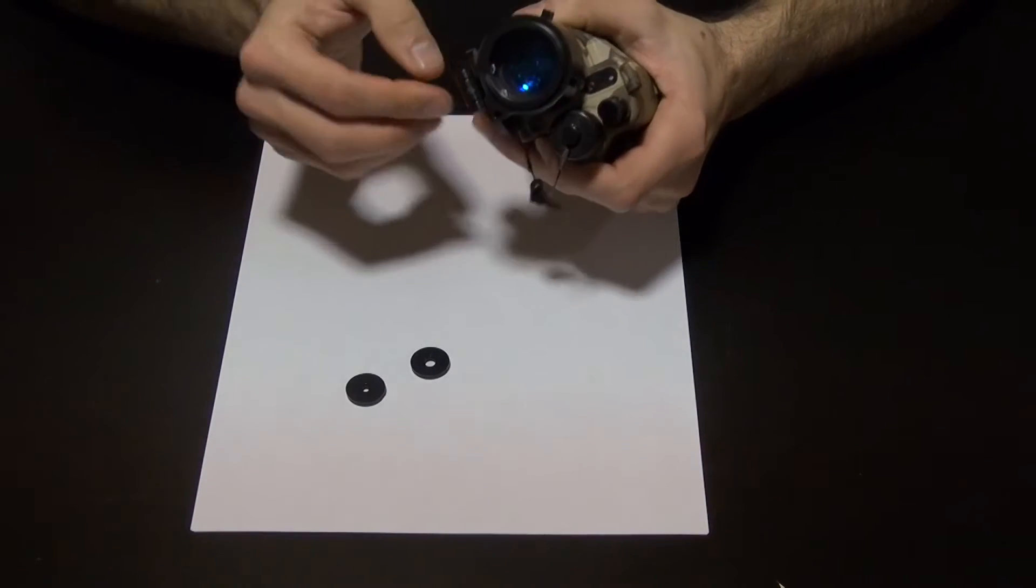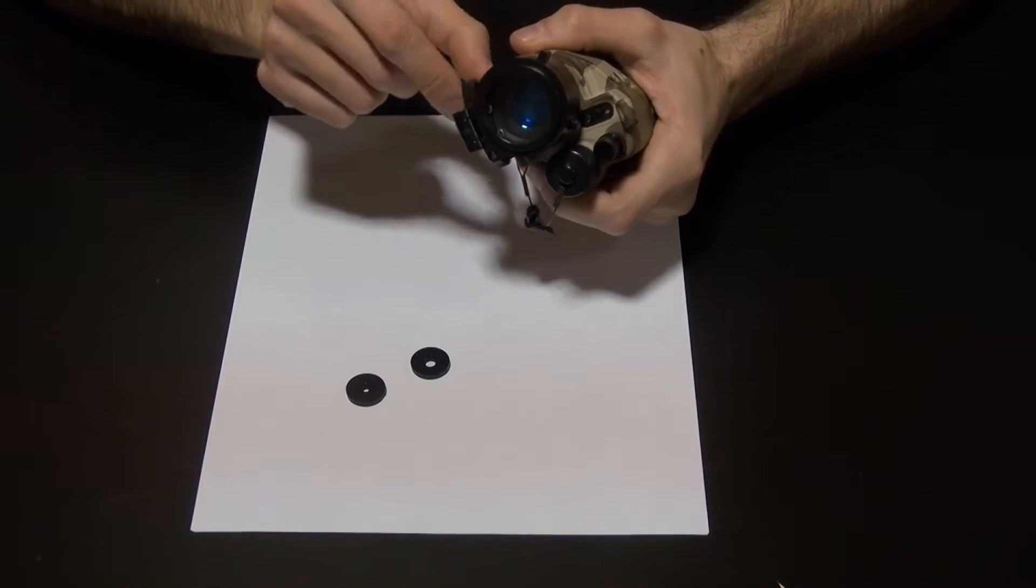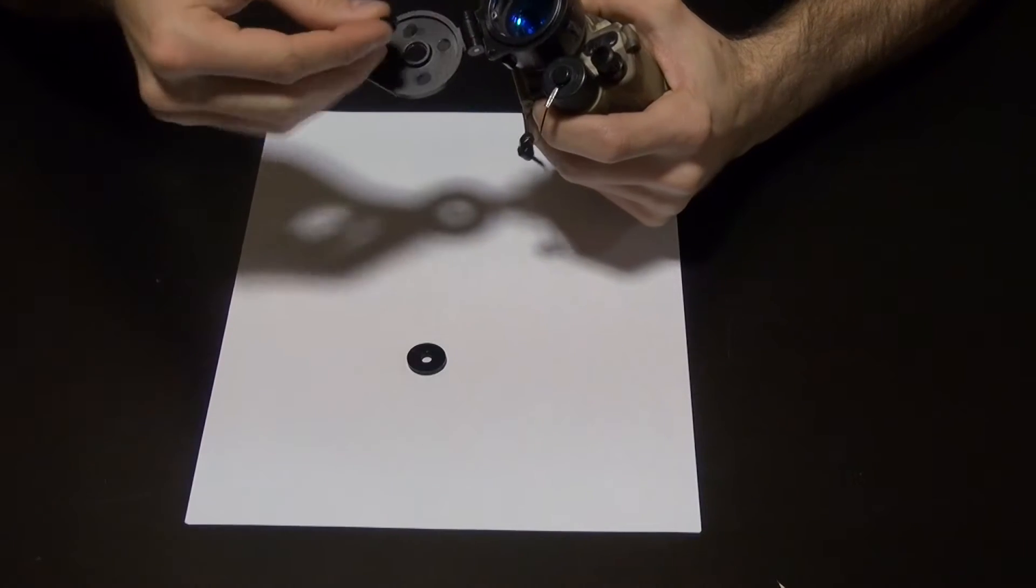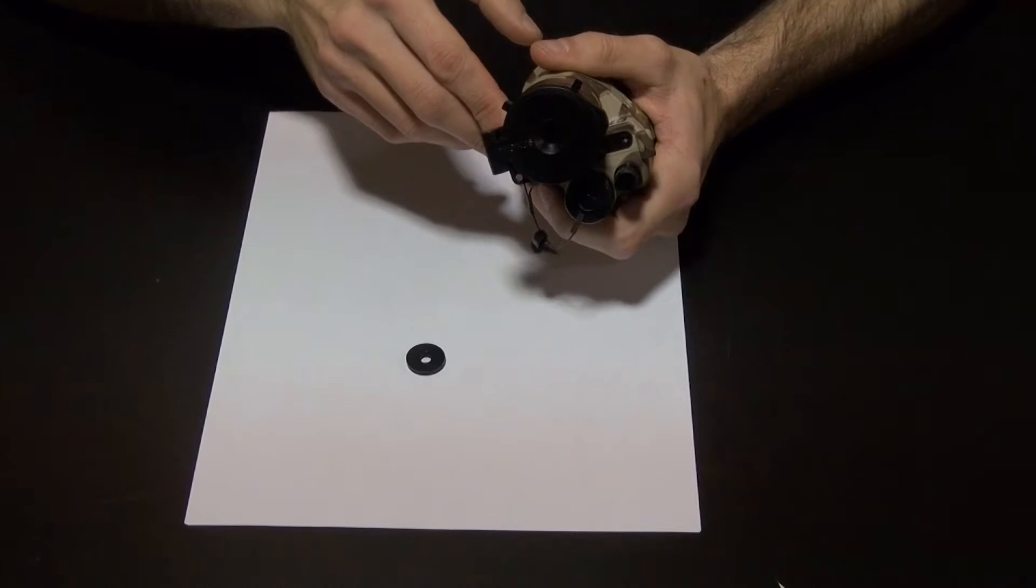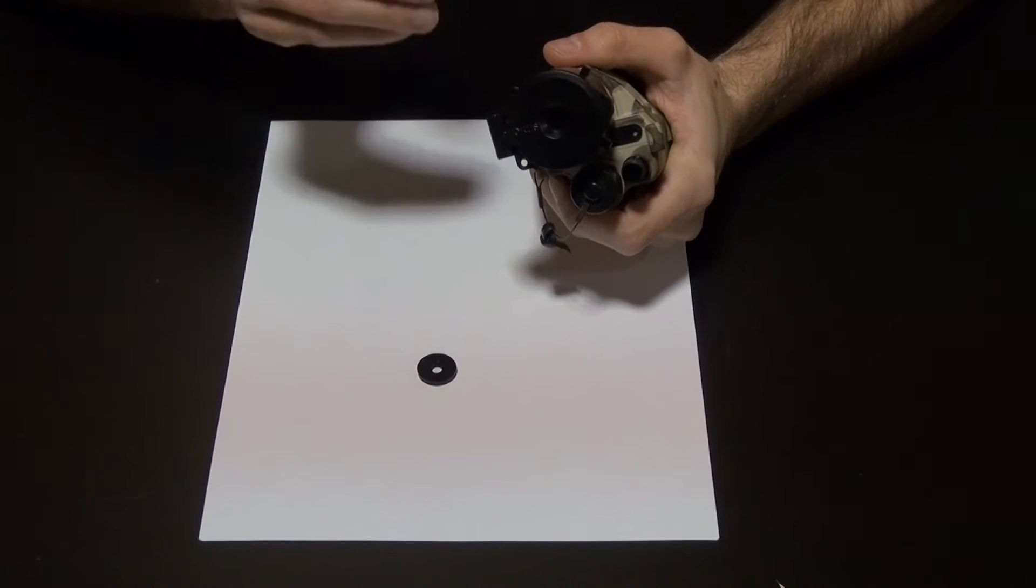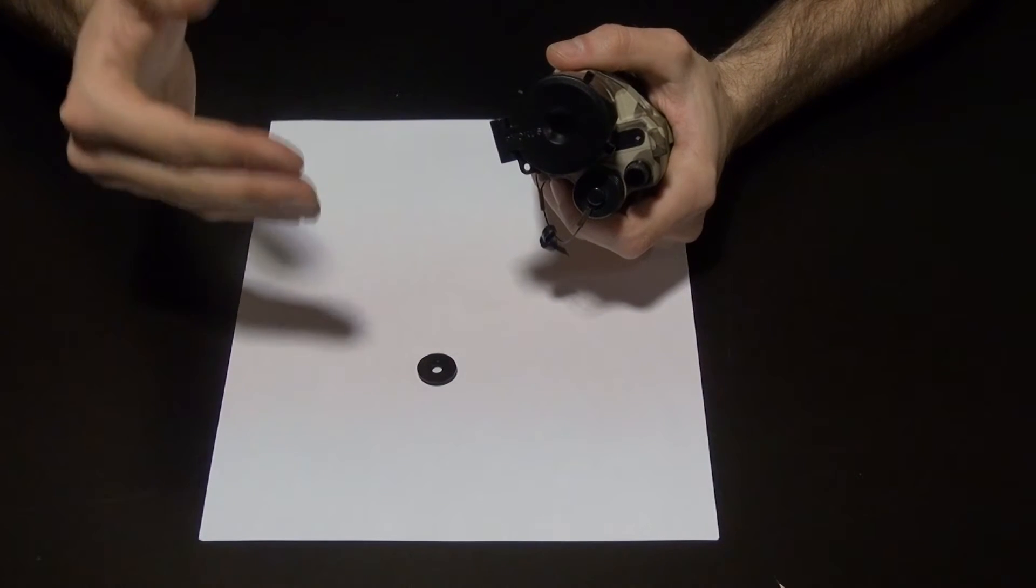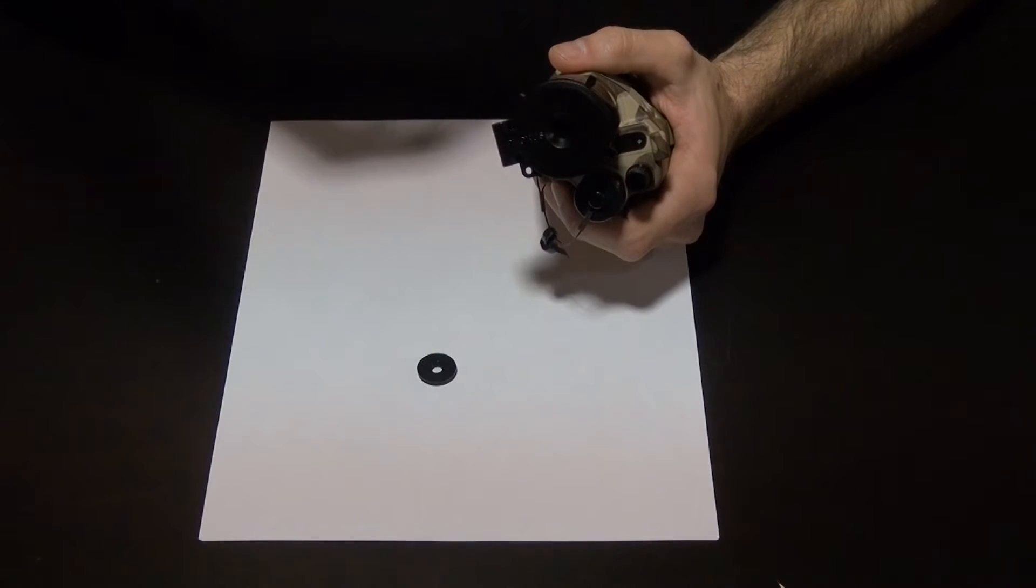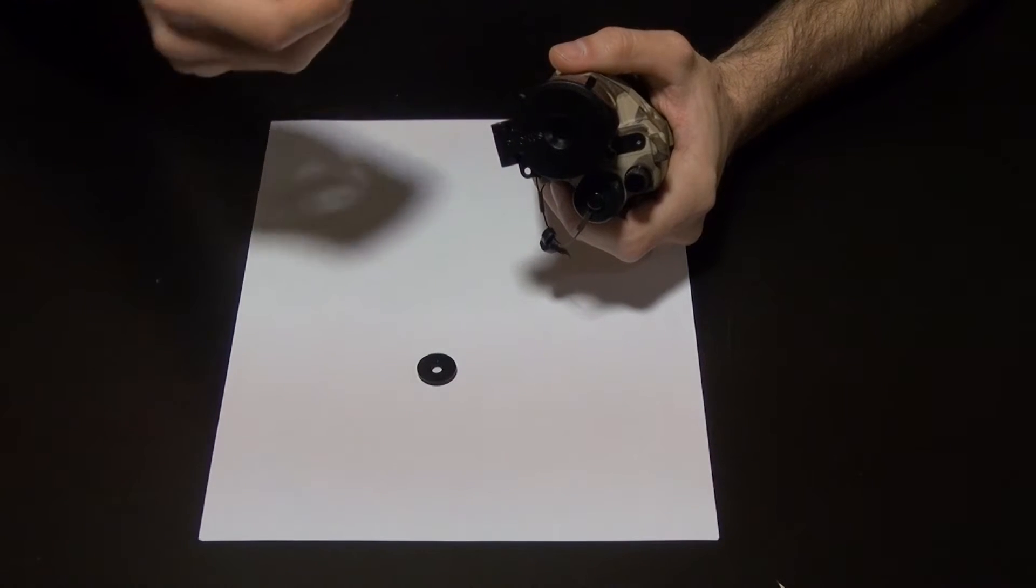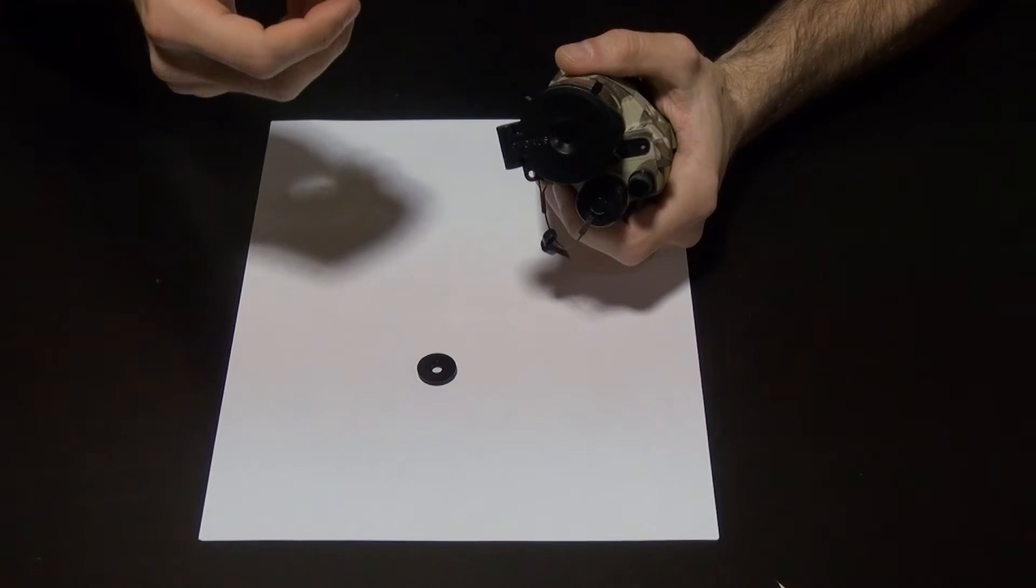You flip it open, you've got your regular objective, and then you've got various aperture pieces that are press fit. When you close it, you can get better focus at closer or further distances depending on your objective - whether you're using it for medical, breaching, or whatever your role for actions on the objective.